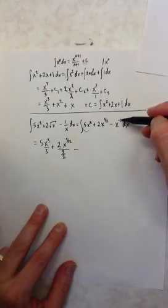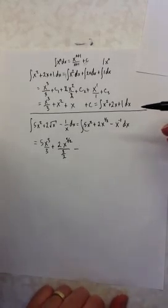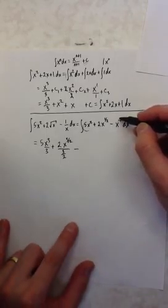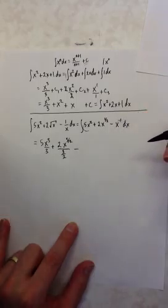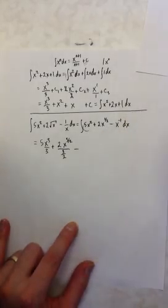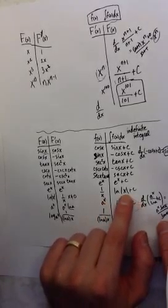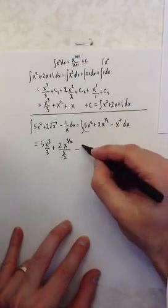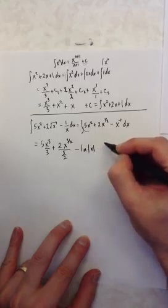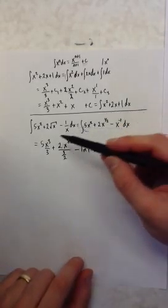Here I'm going to get in trouble. If I add 1 to the power and then divide by the new power, I would be adding 1 to negative 1, which would make it 0, and dividing by 0. There's big trouble there. That's a reminder that you can't use the power rule if you have a power of negative 1, because you'd be dividing by 0. Instead, we have this other rule for 1 over x, or x to the negative 1: the antiderivative is the natural log of the absolute value of x. So this last term is minus the natural log of the absolute value of x, and then I add one catch-all constant plus c at the very end.